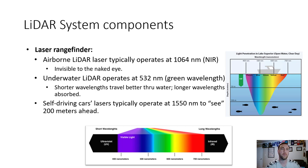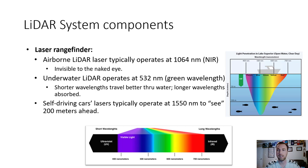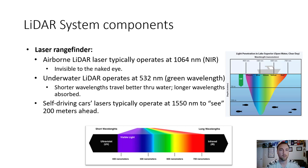Airborne LiDAR lasers typically operate at 1,640 nanometers, which is in the near-infrared band of the electromagnetic spectrum — invisible to the naked eye, outside the roughly 400 to 700 nanometer range visible to humans. Special sensors are required to capture that specific band.